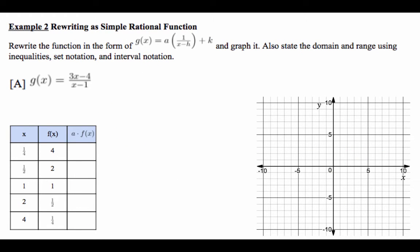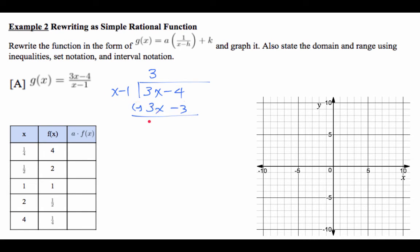Moving on to Example 2. We need to graph a rational function that doesn't immediately look like the transformation form. We'll use polynomial long division. We look at the leading terms: x into 3x gives 3. Multiply 3 by the divisor (x − 1) to get 3x − 3. Subtract, and the remainder is negative 1. So the quotient is 3 with remainder −1.